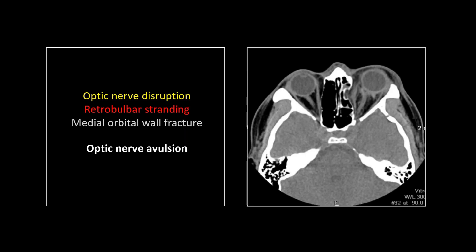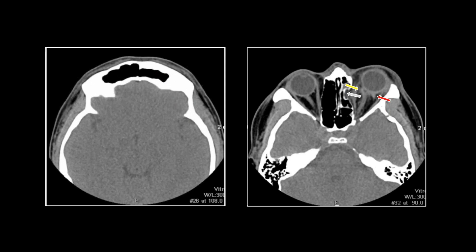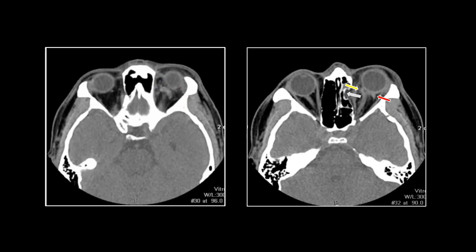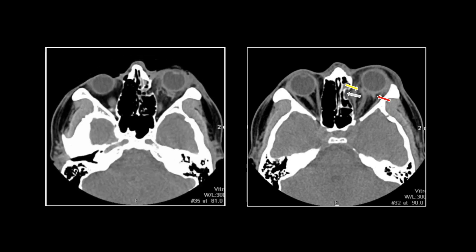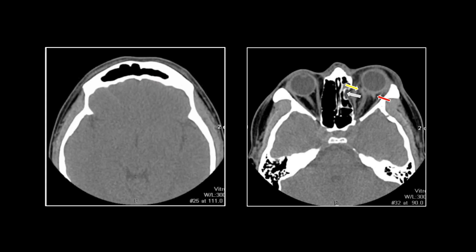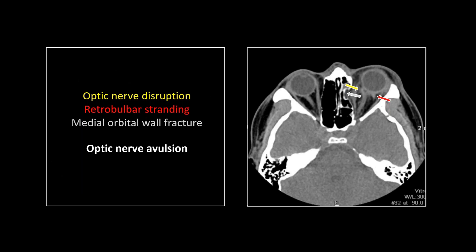This is an incredible case — a ruptured, avulsed optic nerve. You can see it is no longer syncing up with the back of the eyeball as it should. There's also significant retrobulbar stranding and a little medial orbital wall fracture as well. You can see the optic nerve just doesn't attach to the back of the globe any longer. This one was an embarrassment — a radiologist saw this, called the retrobulbar stranding, called the fracture, but did not call the optic nerve. The clinical history said loss of vision left eye. So there's no excuse for missing that one. It's an unusual injury, but even the clinical history was on your side.